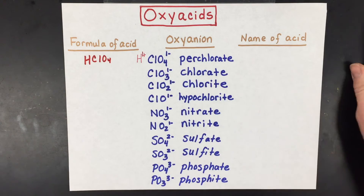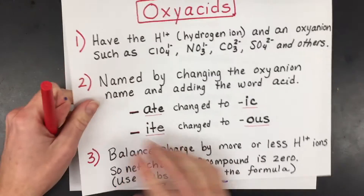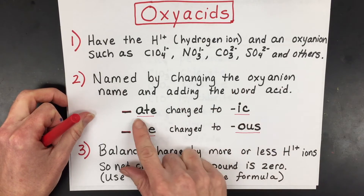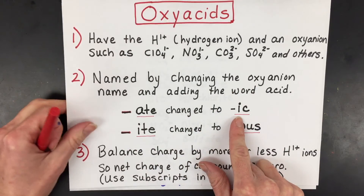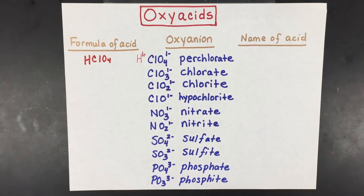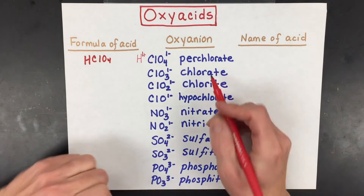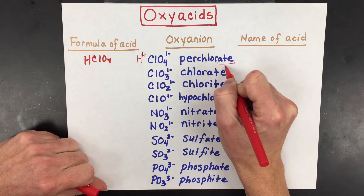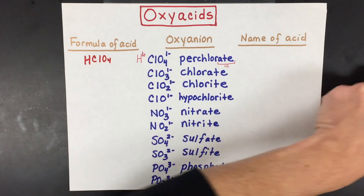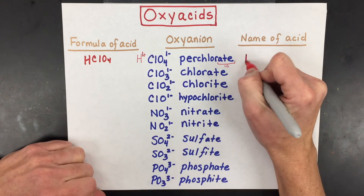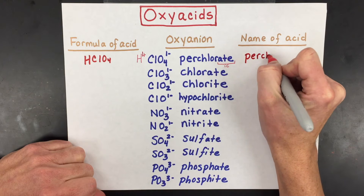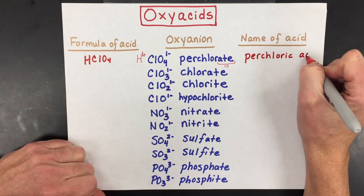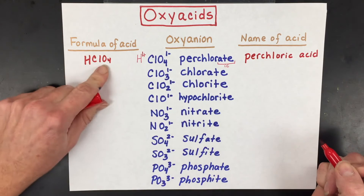To name it, remember that 'ate' turns into 'ic.' A student once said, 'If I ate more, I'd feel sick' — that's how he remembered it. So perchlorate turns into 'perchlor-ic,' and then you add the word 'acid.' Perchloric acid is the name of HClO4.